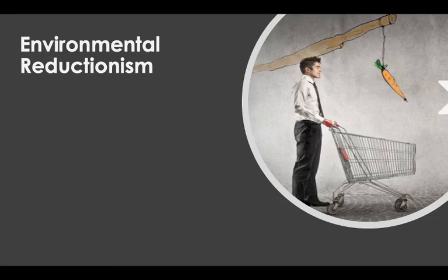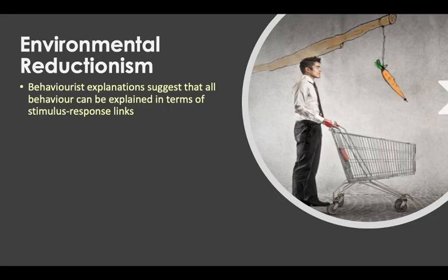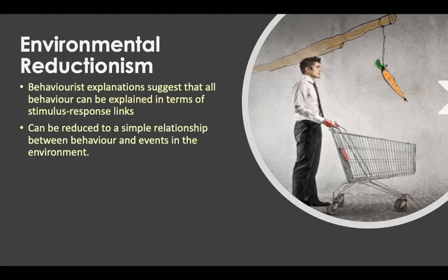The environmental perspective is a bit different. The behaviorist explanation suggests that all behavior can be explained in terms of stimulus-response links — this is environmental reductionism. As we saw in year one, behaviorists study observable behavior only. In doing so, they break complex learning up into simple stimulus-response links that are measurable within the laboratory. The key unit of analysis occurs at the physical level; the behaviorist approach does not concern itself with the mental. We're not interested in what's going on within — we're looking at just the behavior.